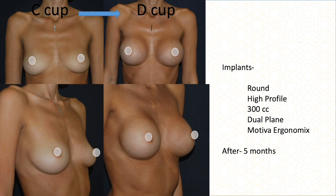This is a C cup patient who is very thin otherwise — unusual because there is not much body fat but she still has good breast volume. We did a 300 cc high-profile dual-plane implant, but she still has a rounded appearance on the top part of the breast because there is no fat in that area. She was happy with the result — five months after surgery, from C cup to D cup.